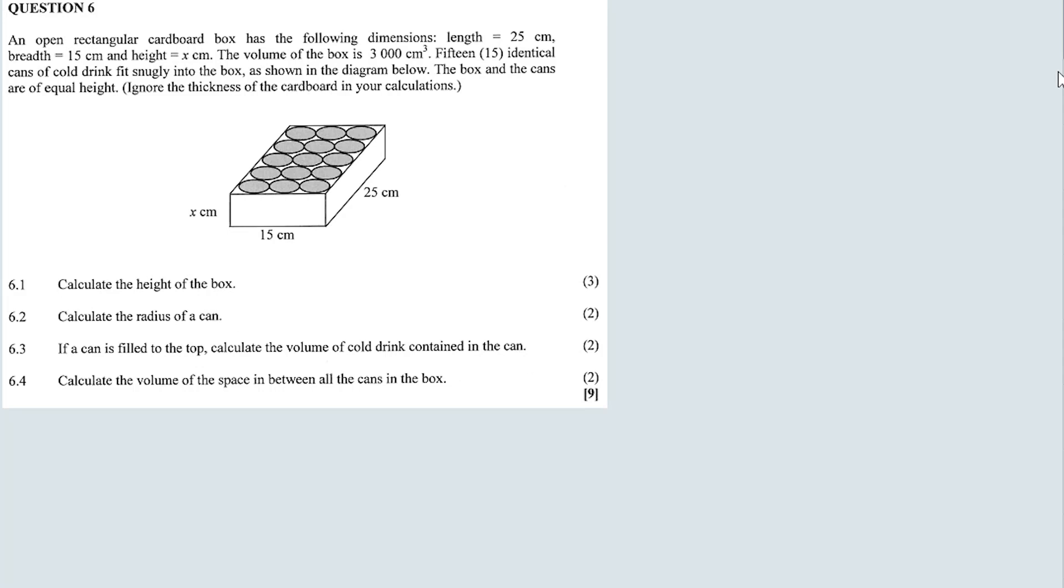Length 25, breadth 15, and the height is x centimeters. So the height is unknown. The volume of the box is 3000 cubic centimeters, and then 15 identical cans of cold drink fit snugly into the box as shown in the diagram below. The box and the cans are of equal height, meaning they have the same height x as the box.